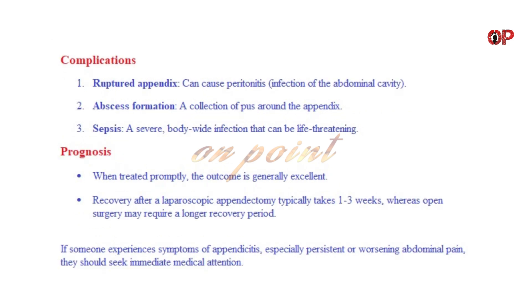Complications. 1. Ruptured appendix — can cause peritonitis, an infection of the abdominal cavity. 2. Abscess formation — a collection of pus around the appendix. 3. Sepsis — a severe, body-wide infection that can be life-threatening.